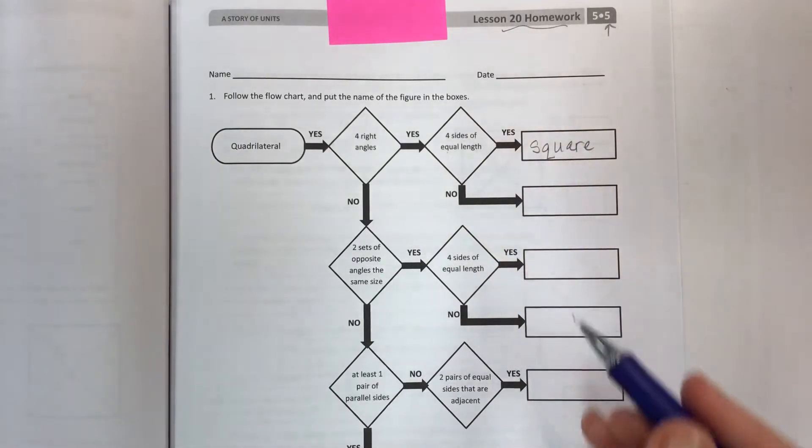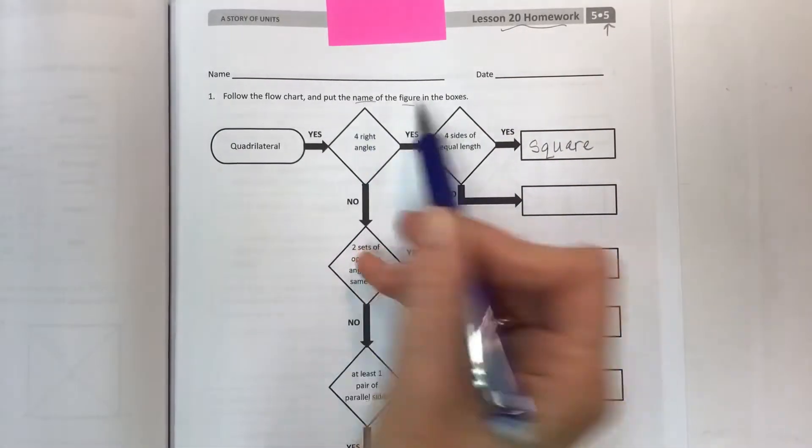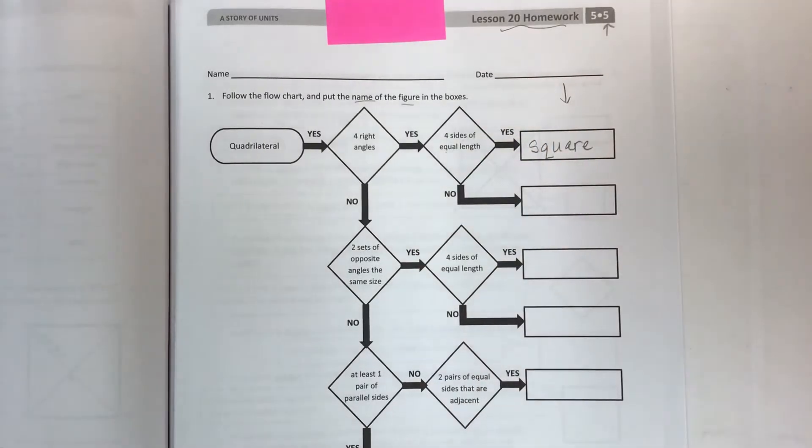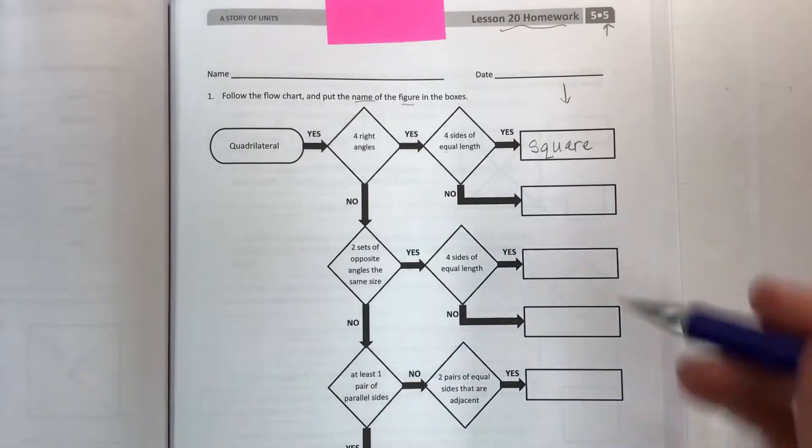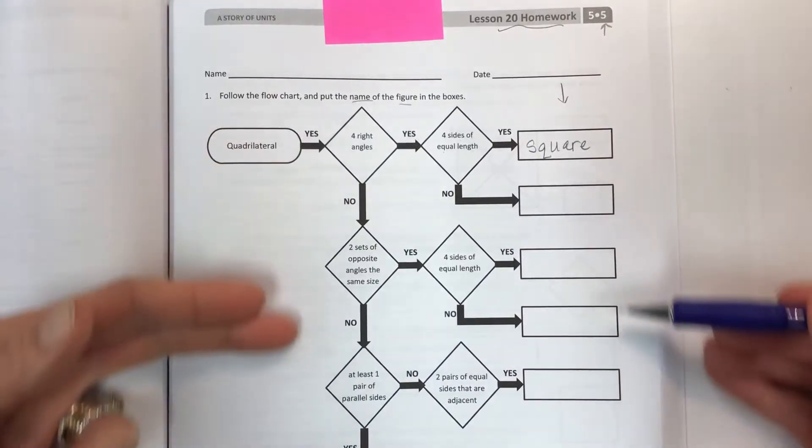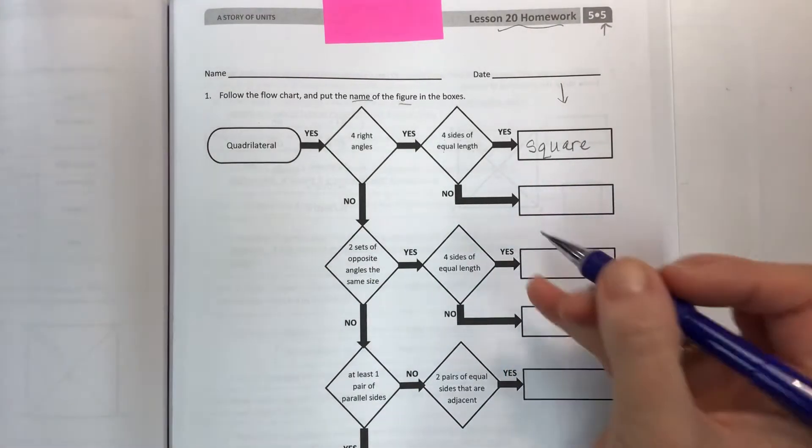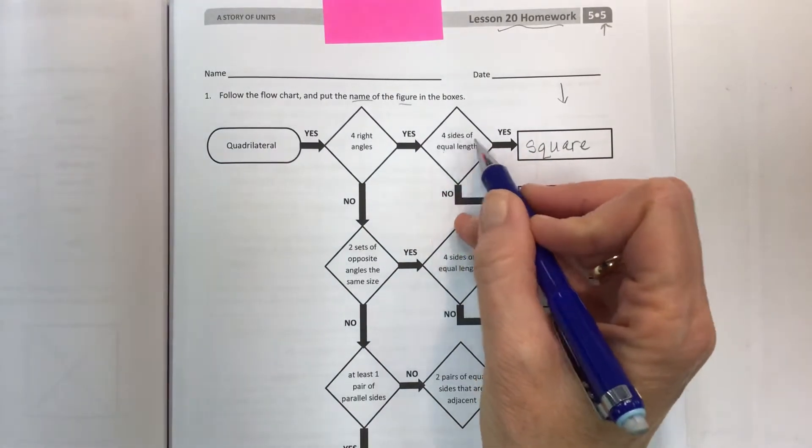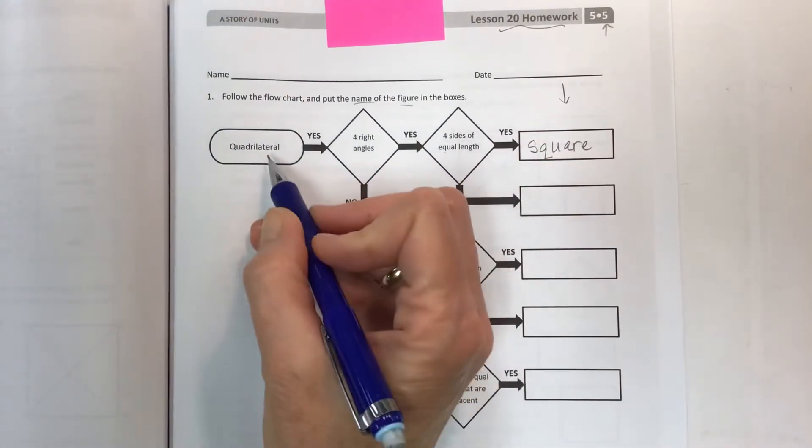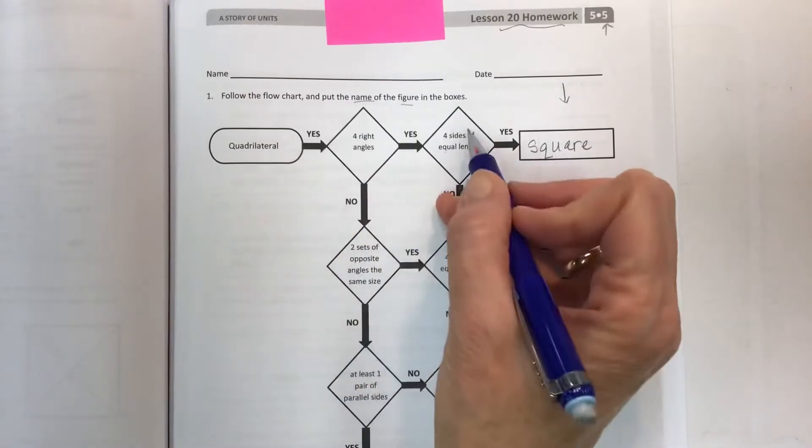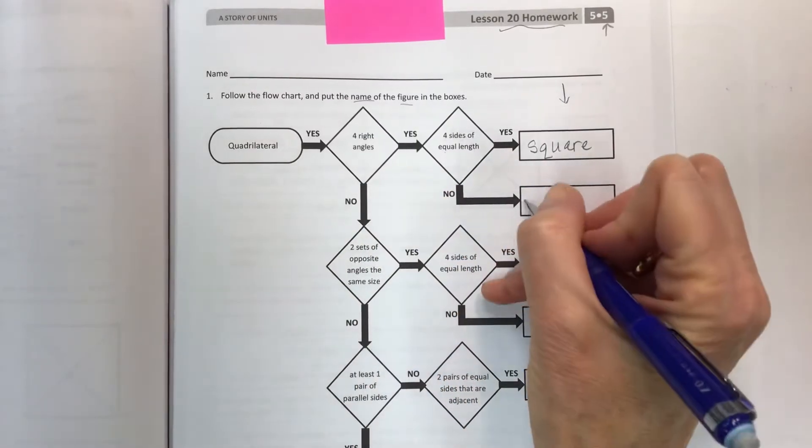So you're going to fill in the name of the figure in the boxes here, and that's how you do this page. Now if you think you can handle it, just pause the video and answer all these on your own. See if you can do the yes/no's correctly. Come back in a few seconds, and here we are back. If you don't have four sides of equal length and you still have a quadrilateral with four right angles, what do you have? You have a rectangle.